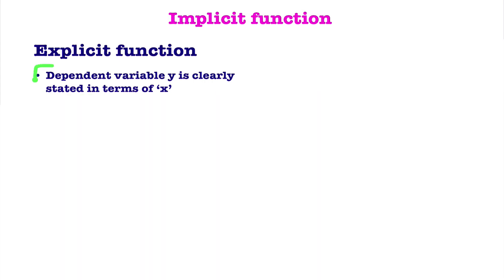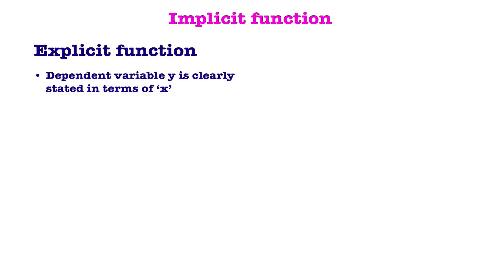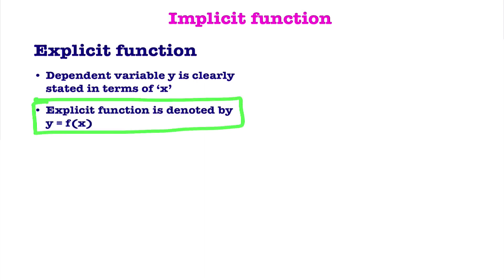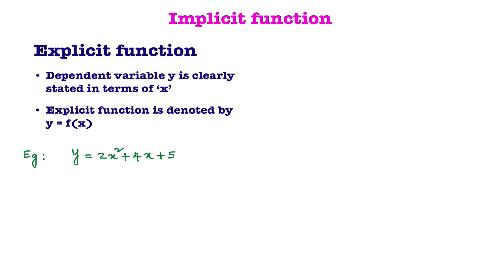What is explicit function? Dependent variable y is clearly stated in terms of x. I will explain what is dependent variable and what is independent variable with examples. Explicit function is denoted by y equal to f of x. Let's see some examples.